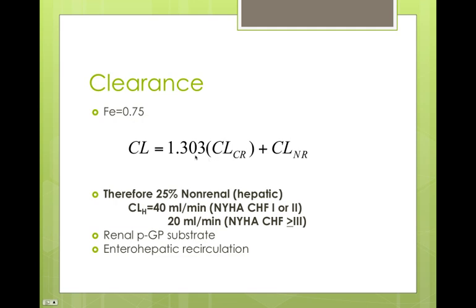This equation is what we can use to determine a patient's clearance. The renal portion is a function of the person's creatinine clearance — you multiply 1.303 times whatever the creatinine clearance is, in mils per minute. Plus whatever you're going to estimate for non-renal clearance. The non-renal clearance is based on a chart: if they have no heart failure or NYHA class 1 or 2, you give them 40 mils per minute. If they have more severe heart failure, class 3 or 4, you halve that to 20 mils per minute. Add the renal and non-renal portions and that gives you total body clearance.